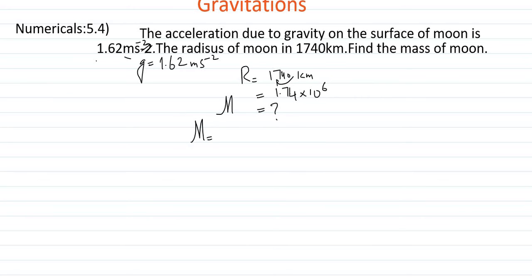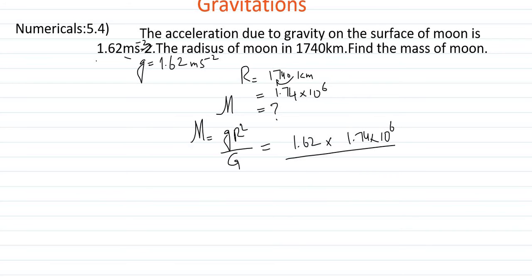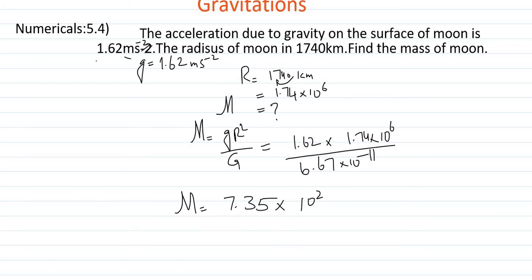To find the mass of the moon, we use the formula M = gR² / G. Putting in the values: g = 1.62, R = 1.74 × 10⁶, and G = 6.67 × 10⁻¹¹. Calculating with a calculator, we get the mass of the moon M = 7.35 × 10²² kg. This is the answer.